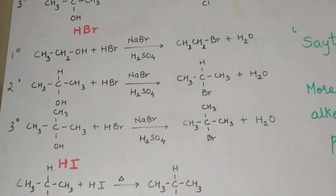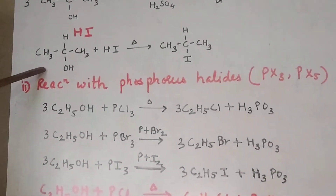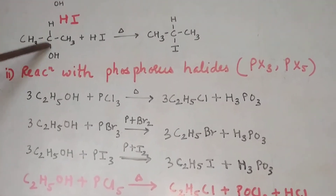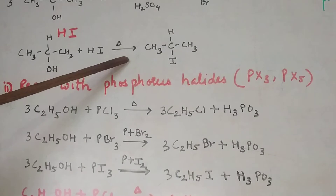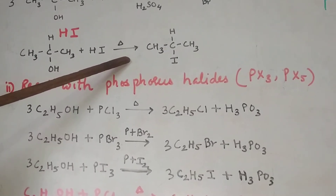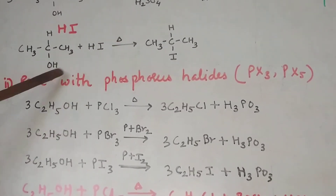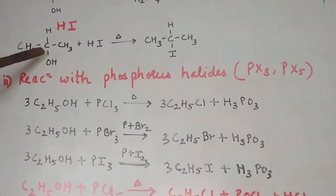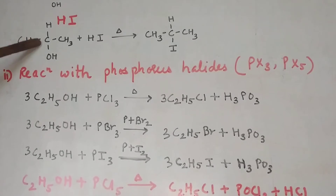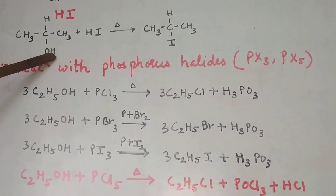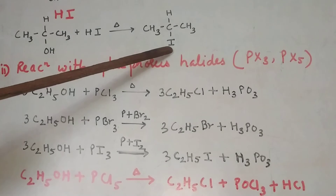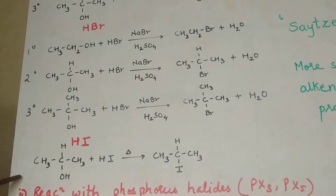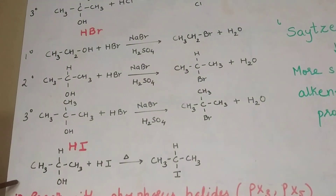Now with HI — we have the reaction of a secondary alcohol where propane-2-ol is treated with HI. It doesn't require any catalyst; only HI directly when heated. There is substitution — OH gets replaced by I. In other words, there is breaking of the C-O bond, OH is going out and I is taking its place.